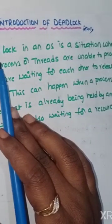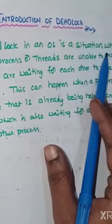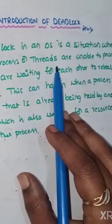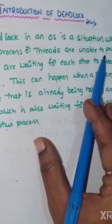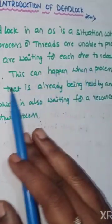First, the definition. A deadlock in an operating system is a situation where multiple processes or threads are unable to proceed because they are waiting for each other to release resources.